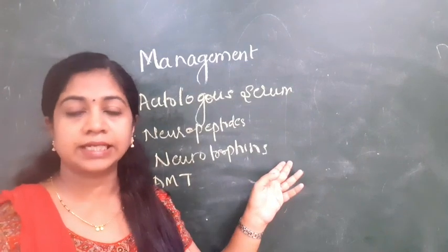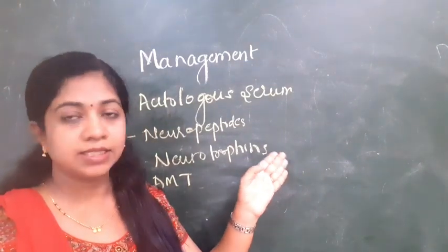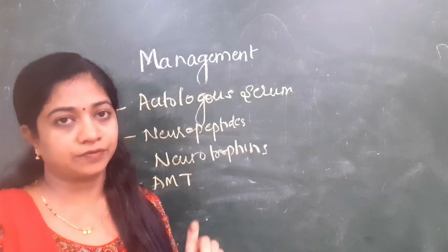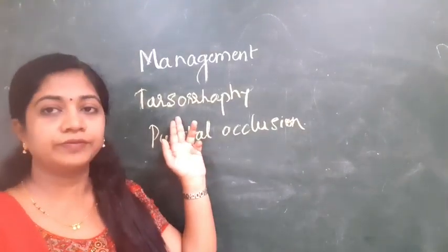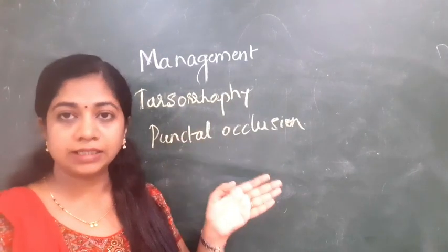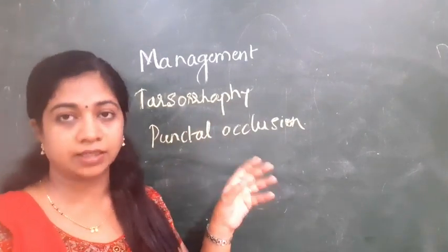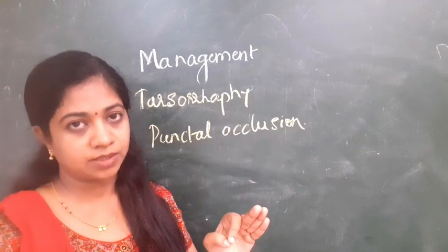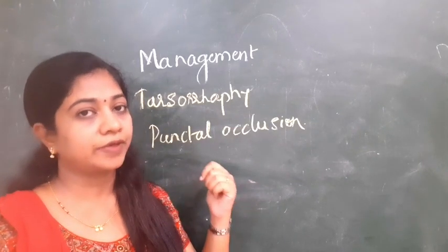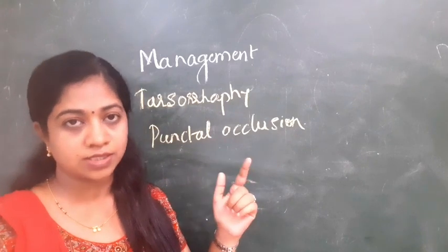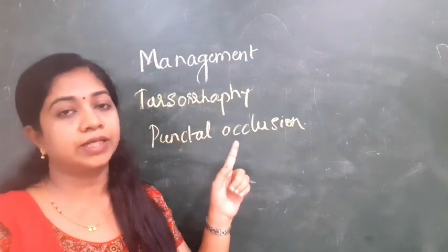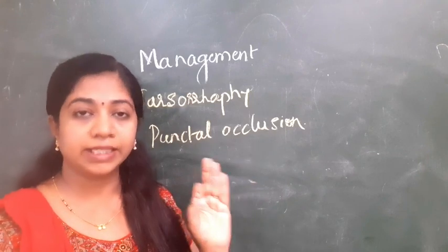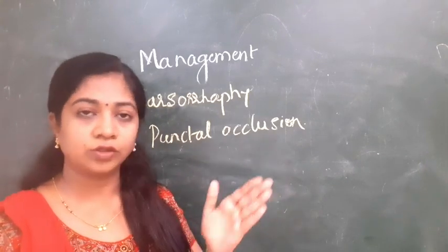Tarsorrhaphy with punctal occlusion needs special mention. Either medial or lateral tarsorrhaphy can be tried along with punctal occlusion. This procedure results in decreased tear film evaporation and decreased osmolarity of the tear film — directly addressing the increased tear film osmolarity seen in the pathogenesis. The tarsorrhaphy should be kept in place for one year along with lubricating eye drops. In spite of all this, if the cornea is not healing, contact lenses of low water content and high oxygen permeability can be used.